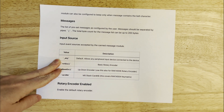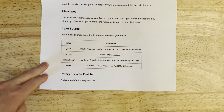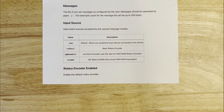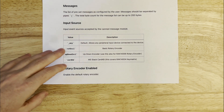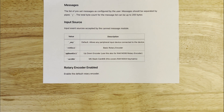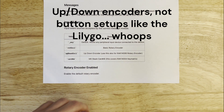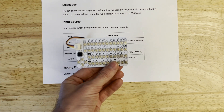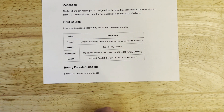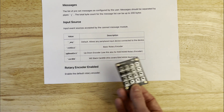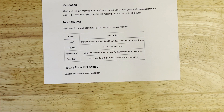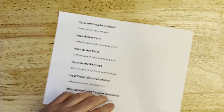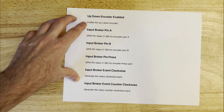We also have an input source configuration that tells the canned message module what to expect in terms of peripherals. We've got 'any,' which allows any peripheral input device, but we also have specific options for rotary encoders, up/down like the LilyGo, the Card KB, and the key matrix. If we're using a rotary encoder, we need to enable that separately. There are a bunch of configurations and I'm not going to go through every single one — there are just so many.